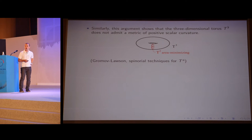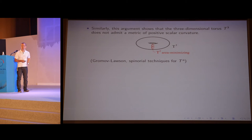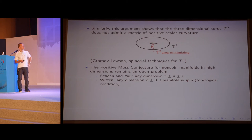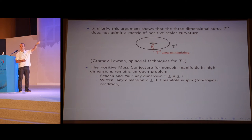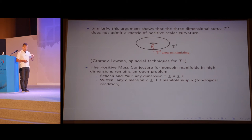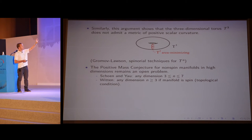The same argument can be used to prove that the three-dimensional torus does not admit a metric of positive scalar curvature. Any three-dimensional torus must contain an area-minimizing two-dimensional torus by minimizing incompressible tori. When you combine the second variation formula along the torus with the Gauss-Bonnet theorem, you get a contradiction if the scalar curvature is positive. The result is true for higher-dimensional tori as well, proven by Gromov and Lawson using spinorial techniques. The positive mass conjecture remains open for non-spin manifolds in high dimensions. The Schoen-Yau proof breaks down in dimension eight because the area-minimizing hypersurfaces could be singular, and Witten's proof works for any dimension but requires the manifold to be spin.